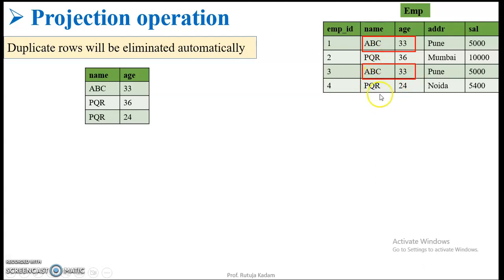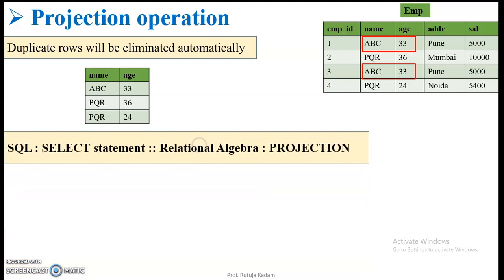If you observe, there is a repetition of PQR but with a different age, so it is not considered a duplicate record. So in projection operation, duplicate rows will be eliminated. We have also seen the SELECT statement in SQL — this SELECT statement in SQL corresponds to the projection operation in relational algebra.